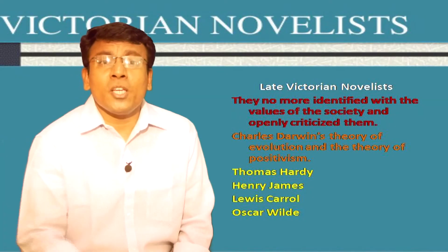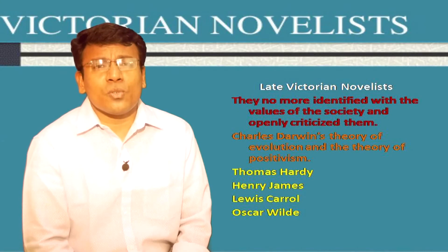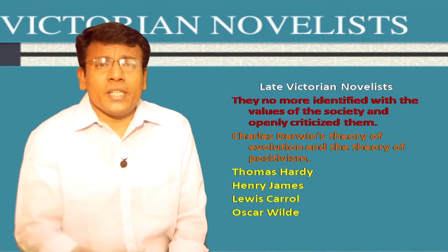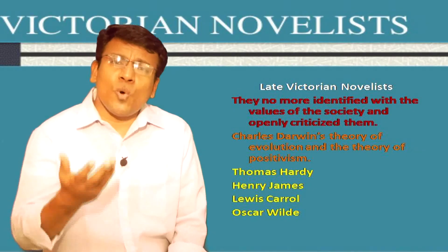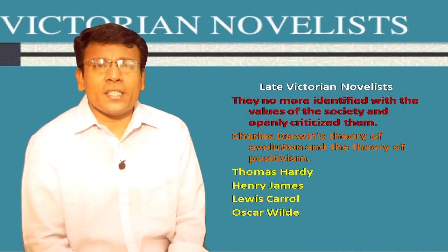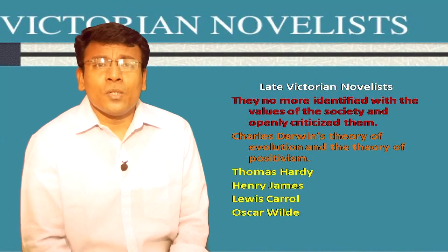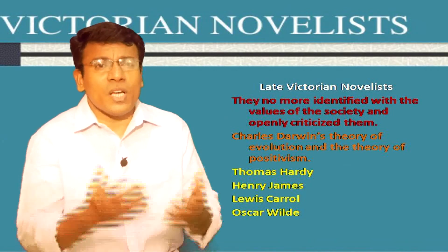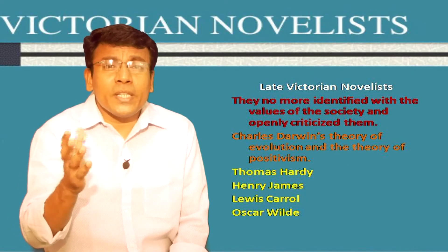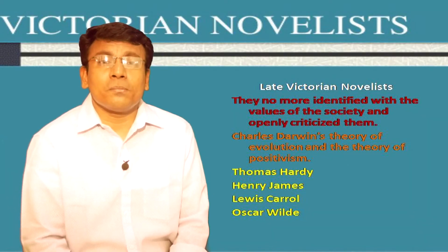The late Victorian novelists were guided by positivism and the theory of evolution. The important novelists of the late Victorian period were Thomas Hardy, who had a pessimistic view of the world; Henry James, an American by birth who showed the conflict between American and European culture; Lewis Carroll, who authored children's works and created the genre of nonsense literature; and Oscar Wilde, the main representative of aestheticism, which considered art as completely detached from any morals — art had only an aesthetic purpose.